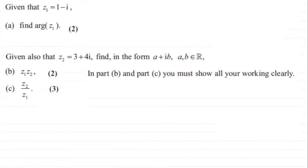Hi, there's a nice example you might like to try if you haven't already on basic complex number methods. We've got here that z₁ equals 1 minus i, and we're asked to find the arg of z₁.